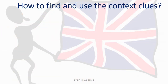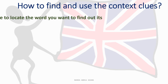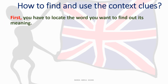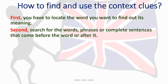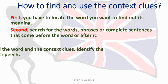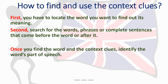How to find and use the context clues. First, you have to locate the word you want to find out its meaning. Second, search for the words, phrases, or complete sentences that come before the word or after it. Third, once you find the word and the context clues, identify the word's part of speech.